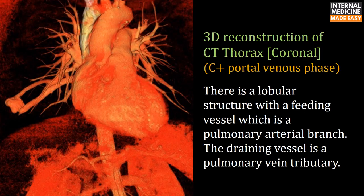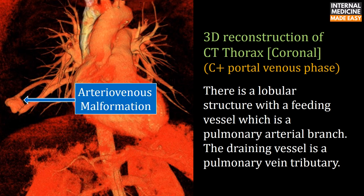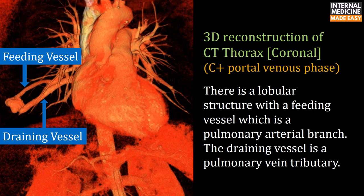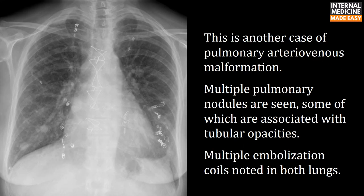This is the 3D reconstruction of contrast-enhanced CT thorax, coronal view. There is a lobular structure with a feeding vessel, which is a pulmonary arterial branch, and a draining vessel which is a pulmonary vein tributary. This is another case of pulmonary arteriovenous malformation showing multiple pulmonary nodules, some associated with tubular opacities, with multiple embolization coils noted in both lungs.